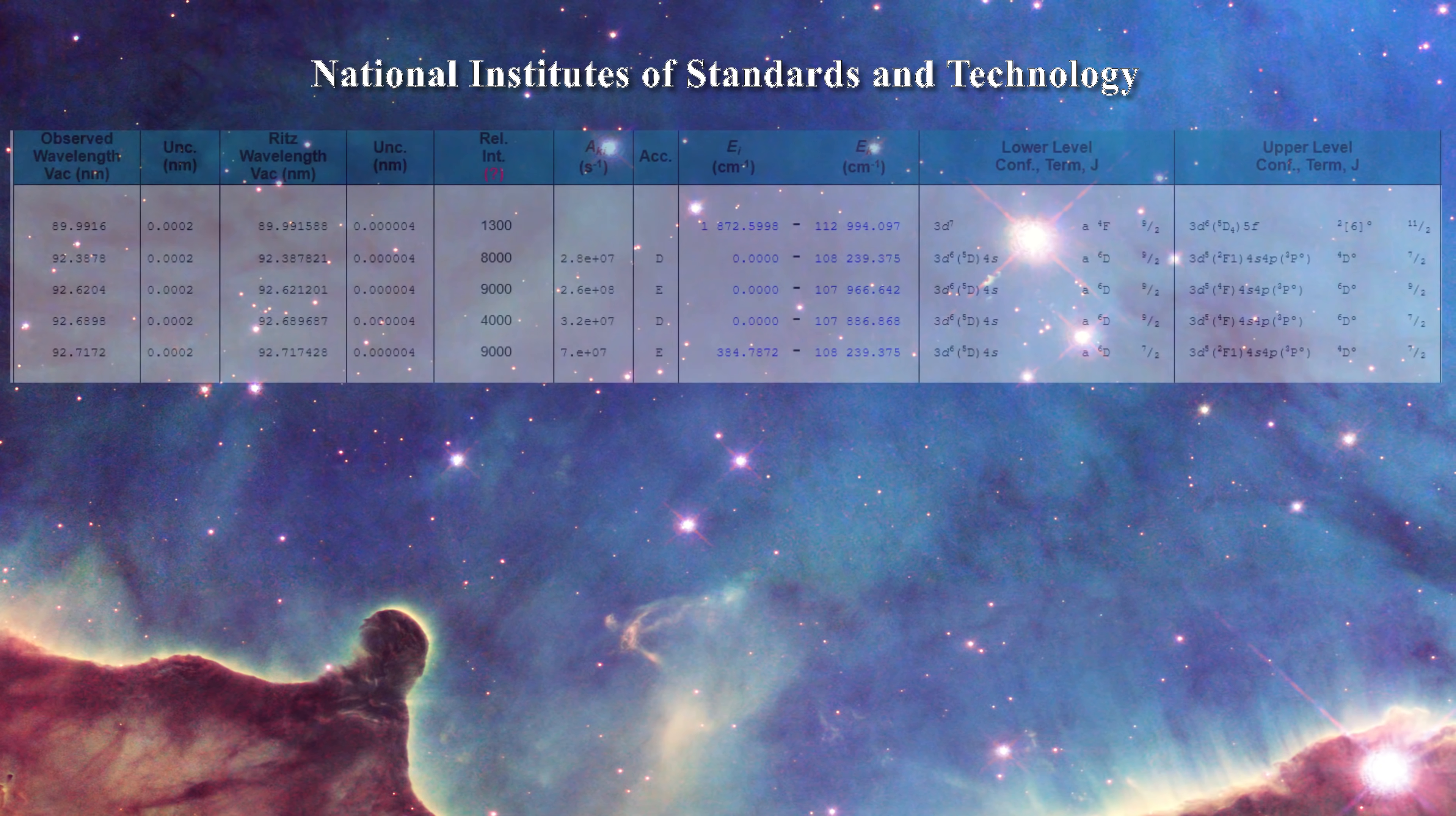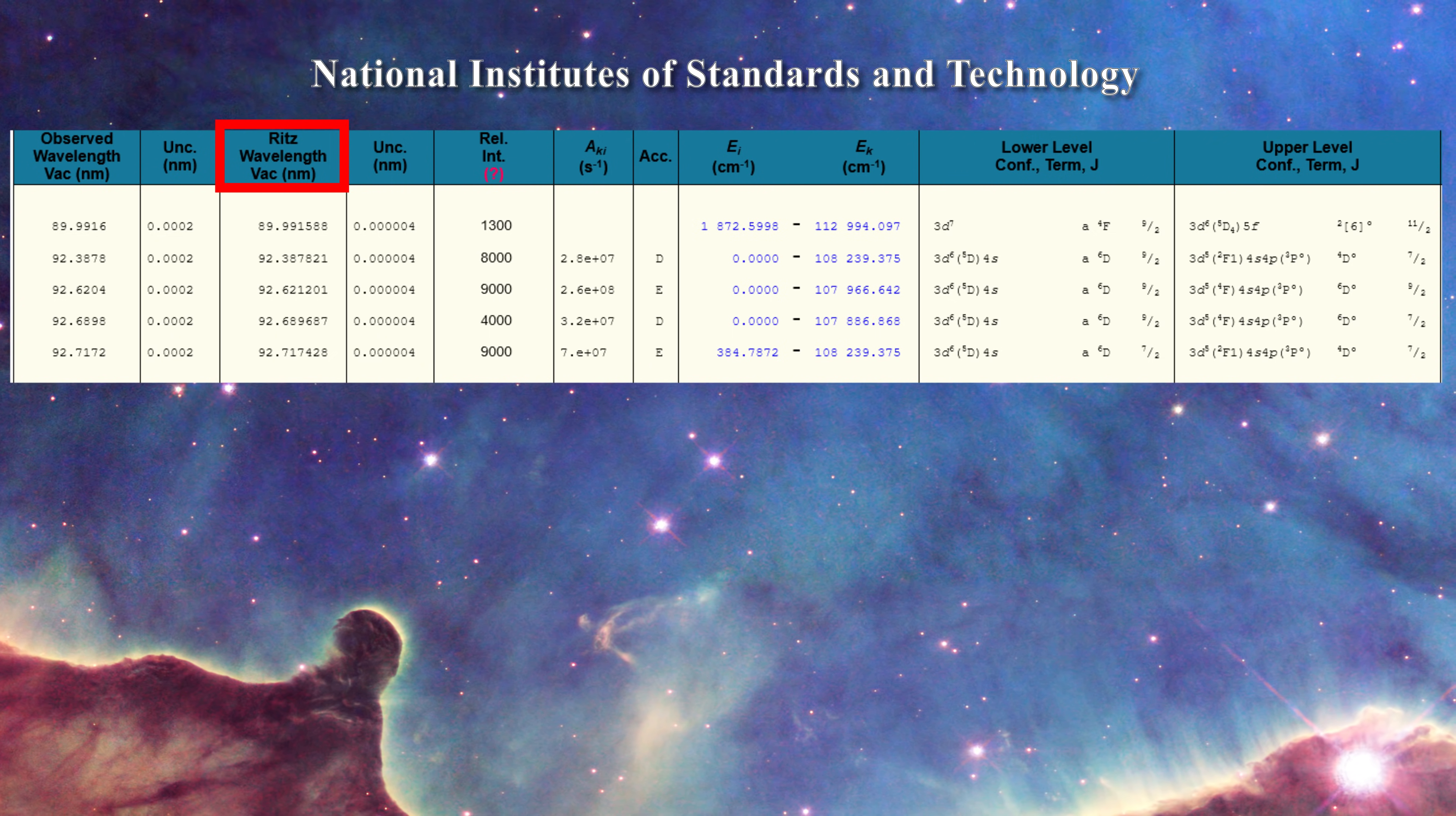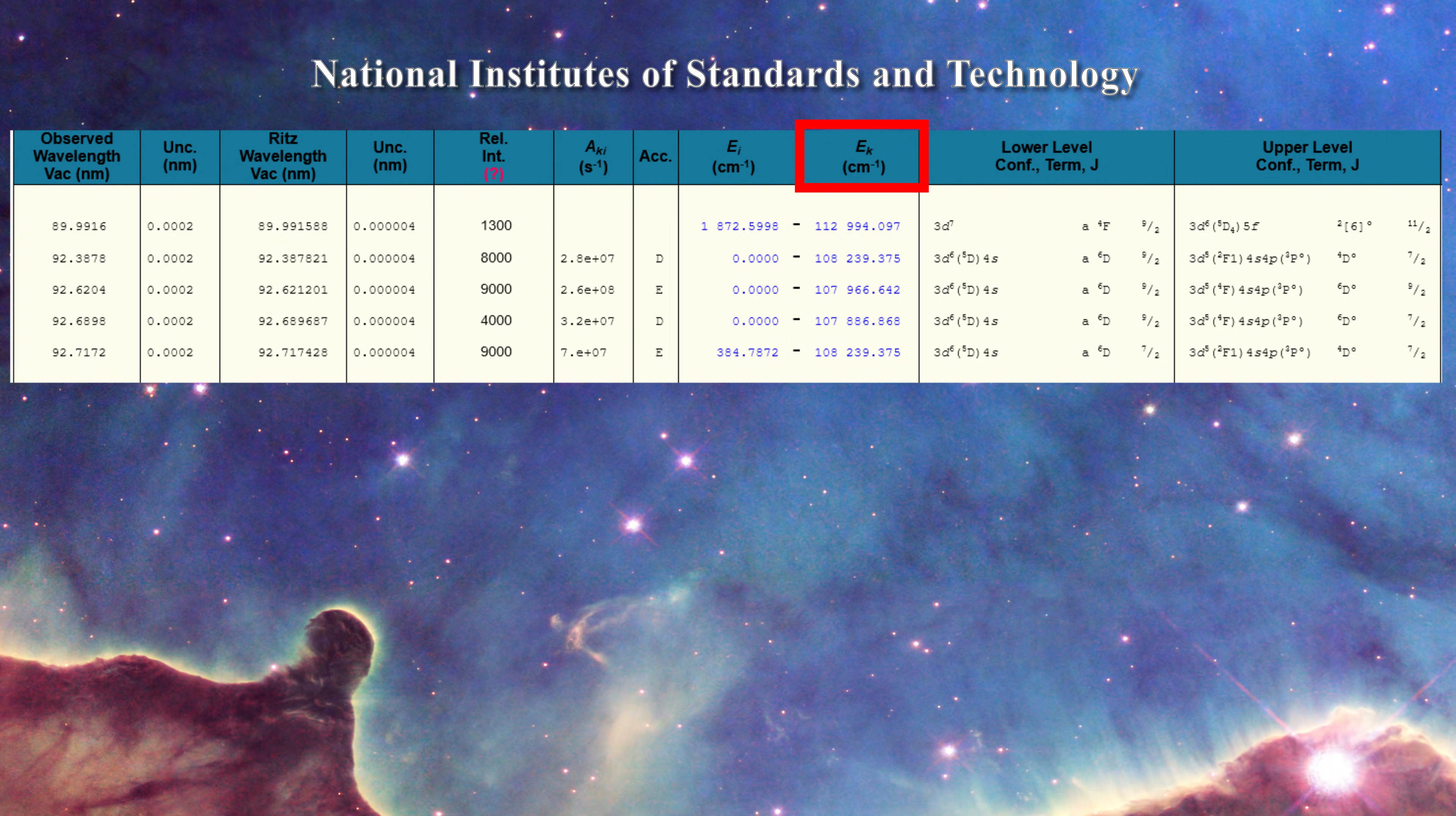If we move to the top of the table we see that the data is organized in several columns. The first describes the wavelength where the line is observed. The Ritz wavelength is the position where it should appear theoretically based on the two energy levels involved in the transition. Next comes the relative intensity of the line. AKI is the Einstein coefficient. It gives the probability per unit time that an electron will spontaneously decay from the upper energy state to the lower energy state. EI is the energy of the lower level and EK is the energy of the upper level.